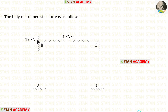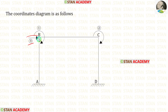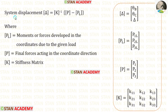Now let us make the fully restrained structure. For that, at points B and C we have to apply fixed supports. Now let us make the coordinates diagram. At joints B and C we have slopes, so the first coordinate is at point B and the second coordinate is at point C. The third coordinate is the sway, and since sway occurs towards the right side, we keep the sway coordinate towards the right side.